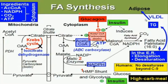For fatty acid synthesis in the cytoplasm, the required ingredients are acetyl-CoA, NADPH, carbon dioxide, and ATP. Once acetyl-CoA enters the cytoplasm, it is converted into malonyl-CoA with the help of the enzyme acetyl-CoA carboxylase (ACC), with the addition of carbon dioxide and ATP. This malonyl-CoA is then converted into the fatty acid palmitate, a 16-carbon molecule.